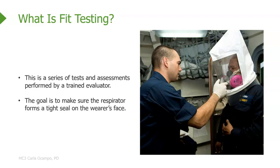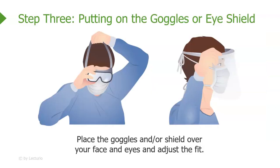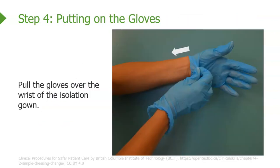You're going to want an N95 or higher respirator for someone with airborne precautions, but you may try different styles or versions at your place of employment to see which one works best for you. Step three: putting on goggles or your eye shield. Place the goggles or eye shield over your eyes, adjust the fit, and make sure it's secure at the back of your head.